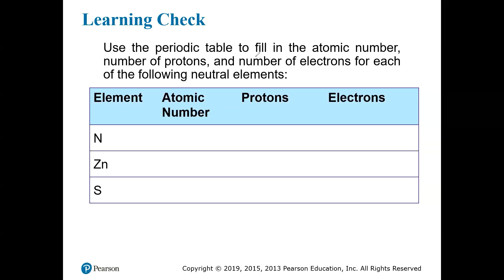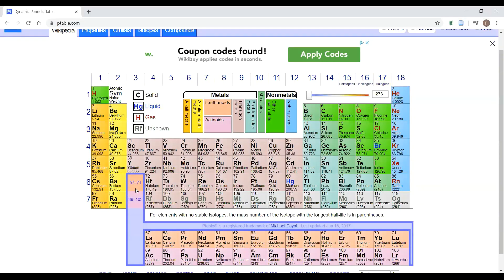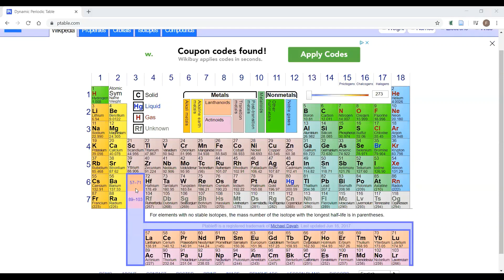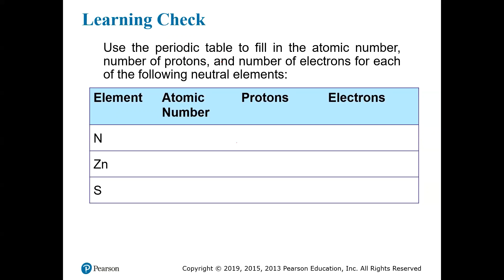The first element we're looking at is nitrogen. Consulting the periodic table — I've pulled up ptable.com — nitrogen is atomic number seven. That's the number above the N in the box. Going back to our slides, nitrogen is atomic number seven, which means nitrogen has seven protons in its nucleus. Since we're talking about atoms and haven't specified a charge or mentioned ions, it's safe to assume this is a neutral atom of nitrogen, meaning the number of protons equals the number of electrons — seven protons and seven electrons, giving a charge of zero.